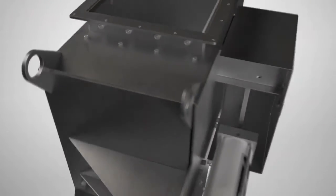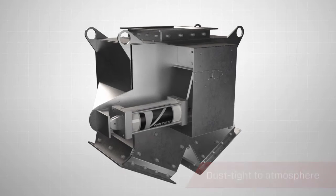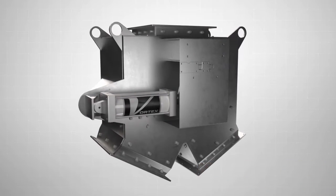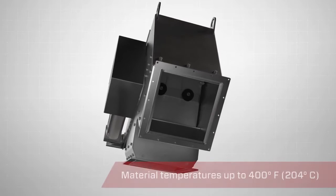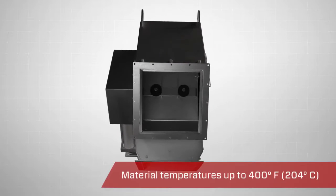The Vortex Pivoting Shoot Diverter is dust-tight to atmosphere. Because the diverter has no interior seals, it is capable of handling material temperatures up to 400 degrees Fahrenheit, 204 degrees Celsius.